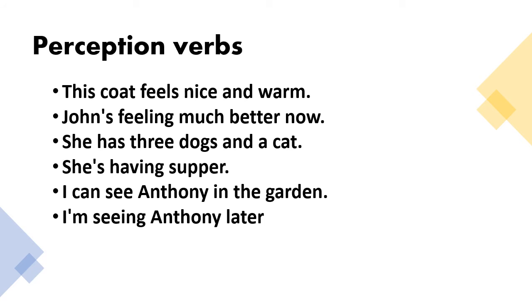So, there are perception verbs that are often used with can. These verbs may be used in continuous form but with different meanings. For example, this coat feels nice and warm. Your perception of the coat's quality. Another example is, John's feeling much better now. So, it means that his health is improving.